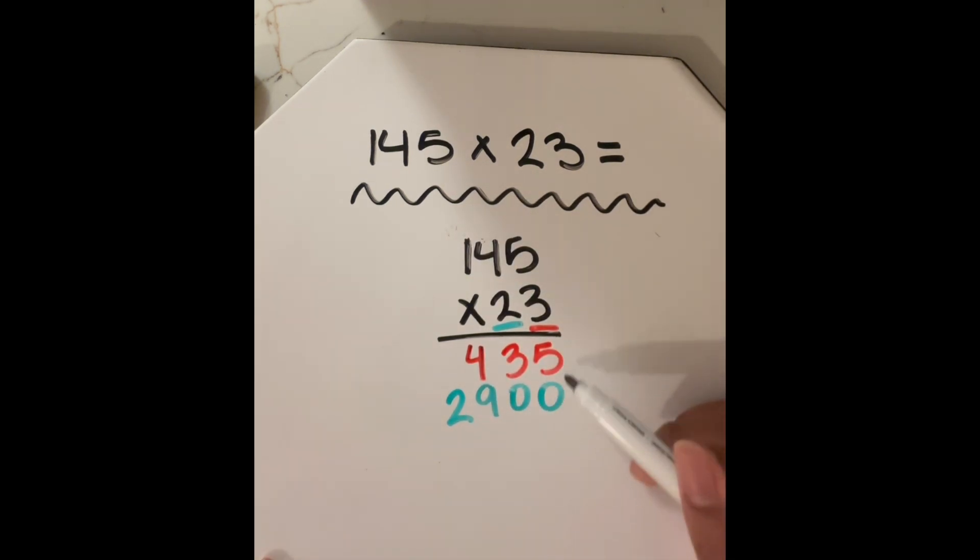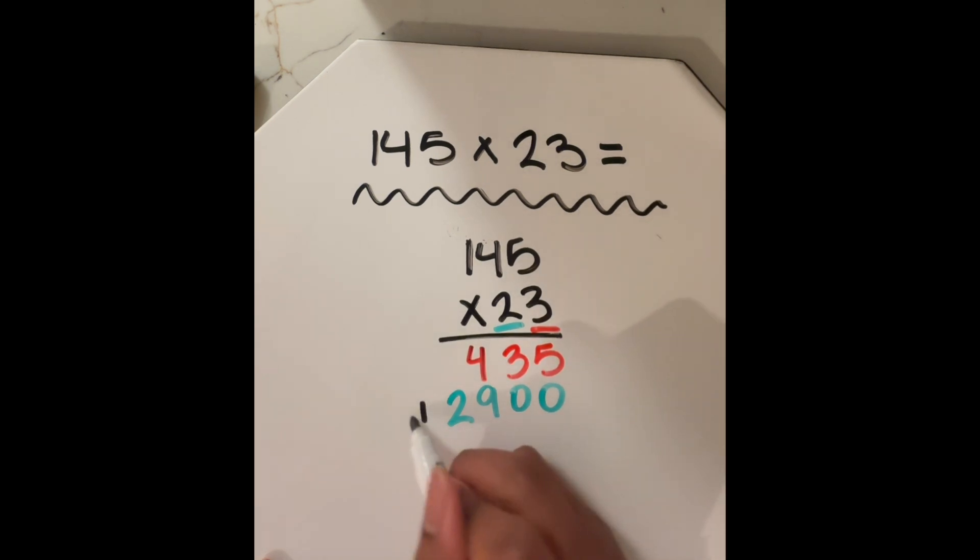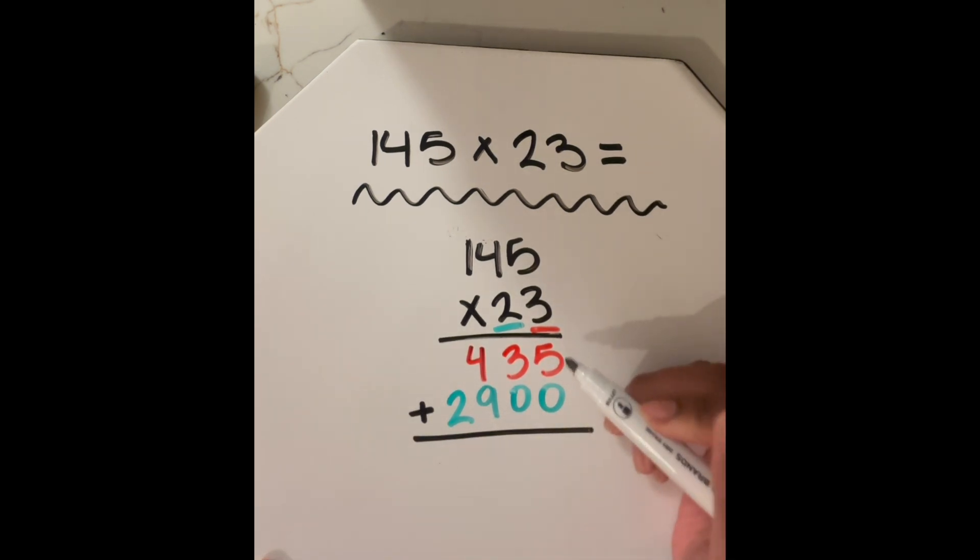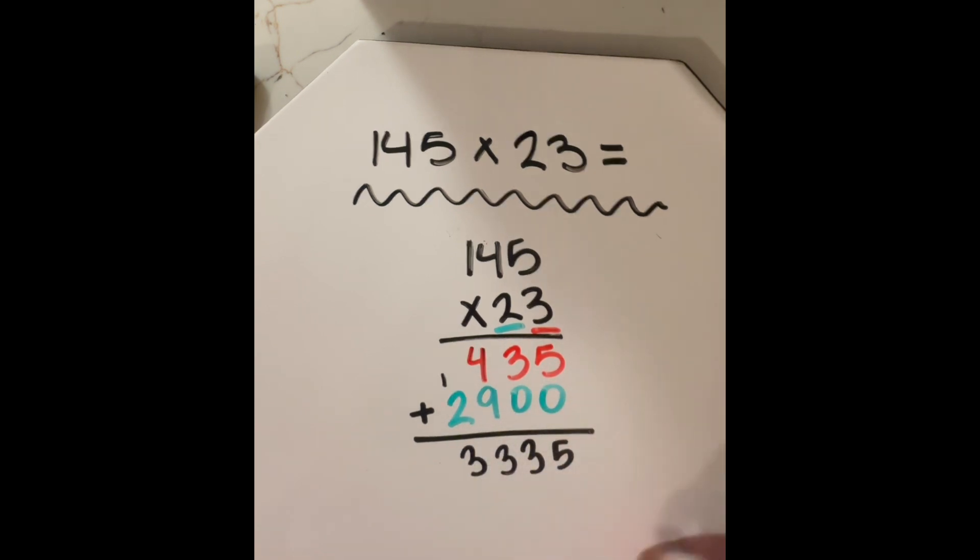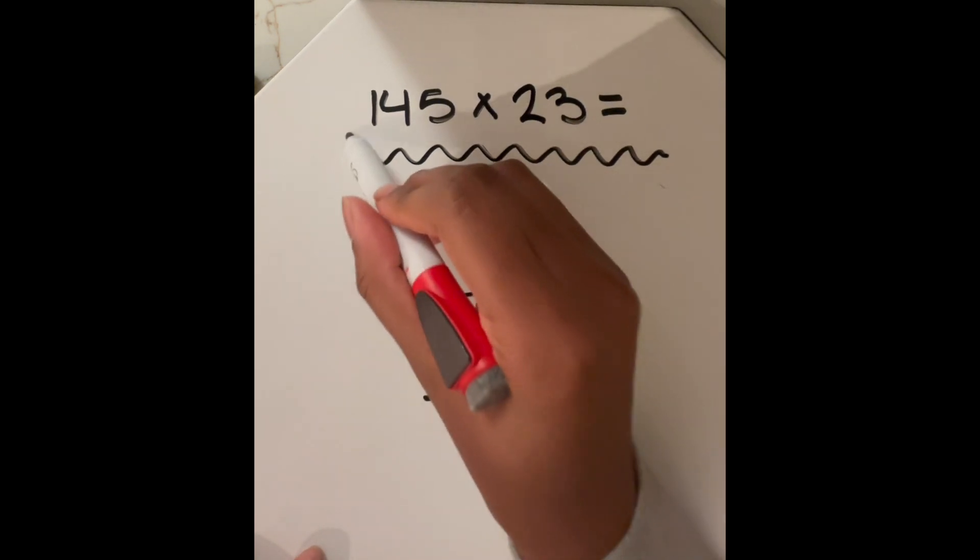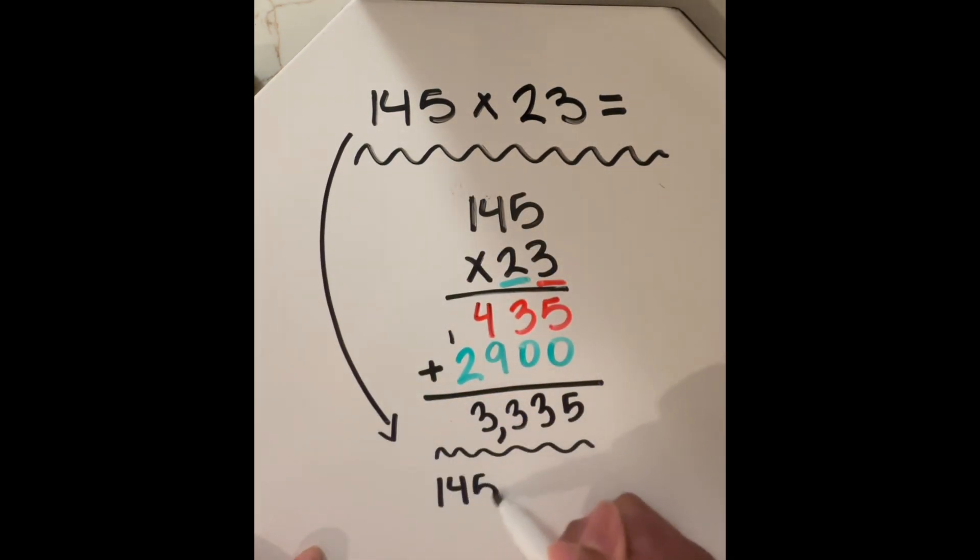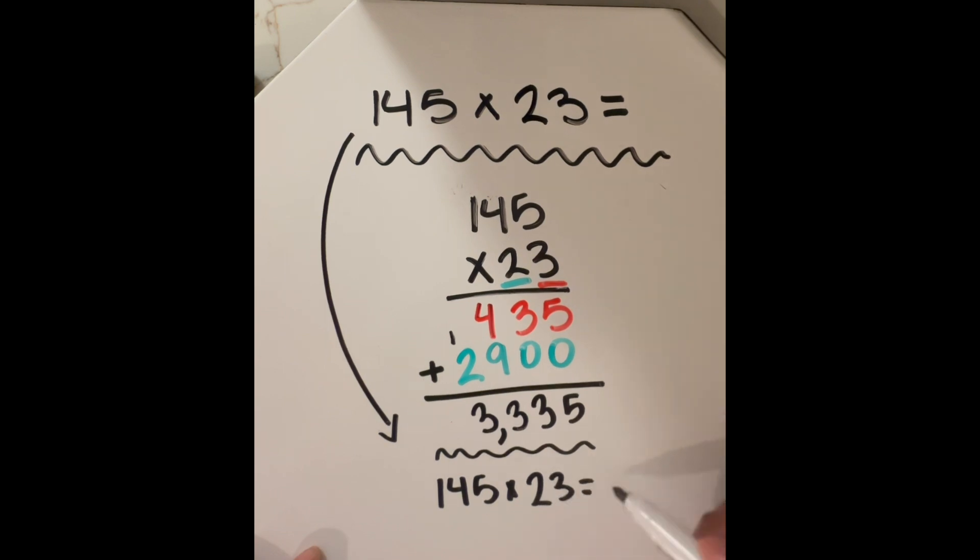And now that we have our two numbers over here, I just want to, in my last step, find the sum. So I'm going to add these numbers with basic addition. So five plus zero is five, three plus zero is three, four plus nine is 13, and two plus one is three. And so I get, I'm going to put in my comma, 3,335. So the answer to this problem up here of 145 times 23 is 3,335.